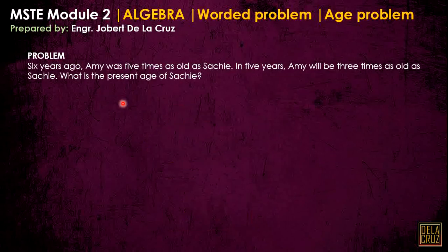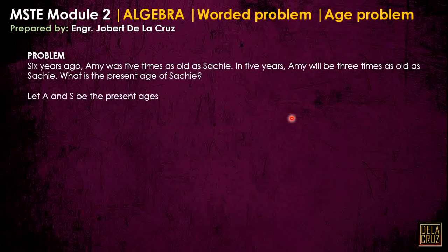Six years ago, Ami was five times as old as Sachi. In five years, Ami will be three times as old as Sachi. What is the present age of Sachi? So again, let's assume variables. Let's assume the present age of Ami is A and the present age of Sachi is S. Let's be practical and use the initials of their names.